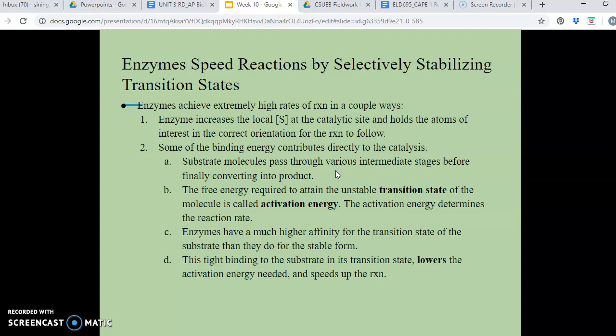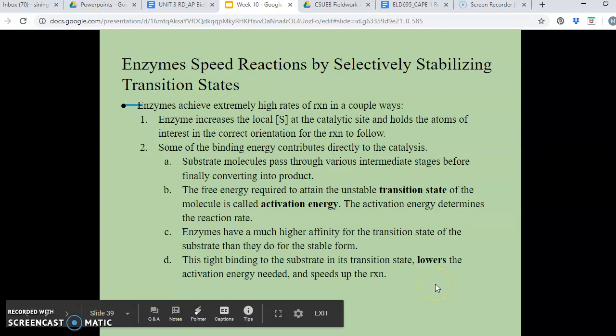So enzymes have a much higher affinity for the substrate molecule when it's in the transition state than it does for the stable form. So it prefers the unstable transition state. So this, it will bind very tightly to the transition state of the substrate. And so the tight binding to the substrate in its transition state will actually lower the activation energy needed and then thus speed up the chemical reaction.